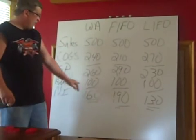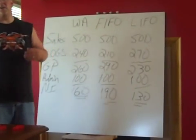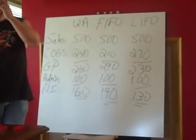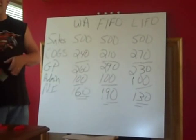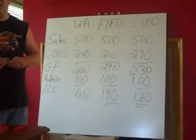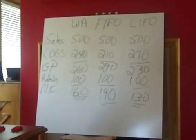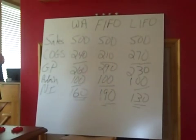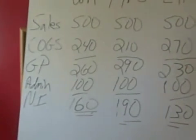We're also going to have, down on the bottom here, admin expenses of $100, which doesn't change based on the method that we use. So the only thing that really changes is our cost of goods sold.